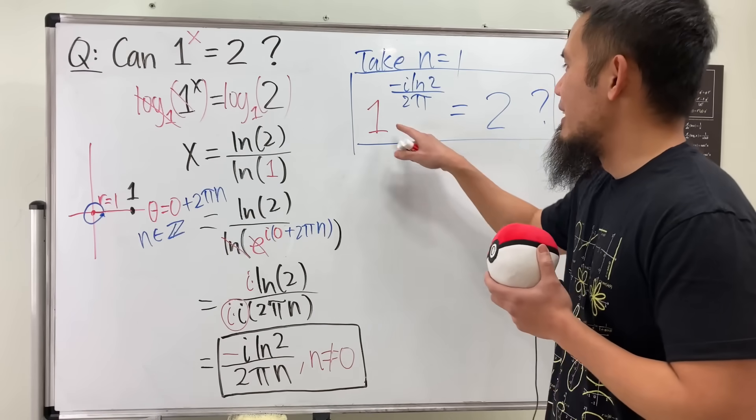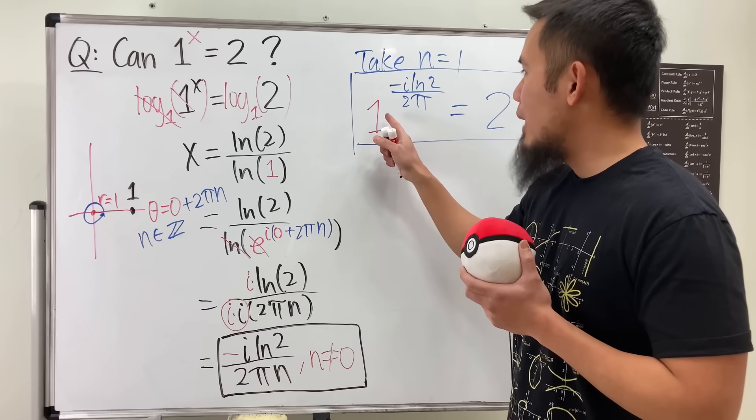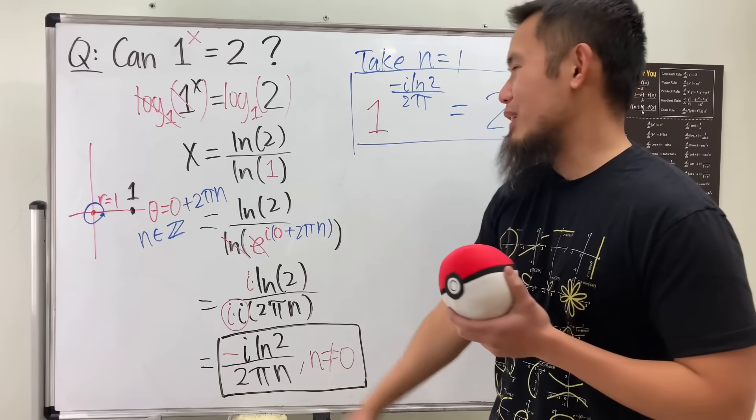And the reason is because if you really want to do the complex analysis, when you do 1 to this power, you have to write 1 in terms of its polar form. And then you have infinitely many answers for that, right?